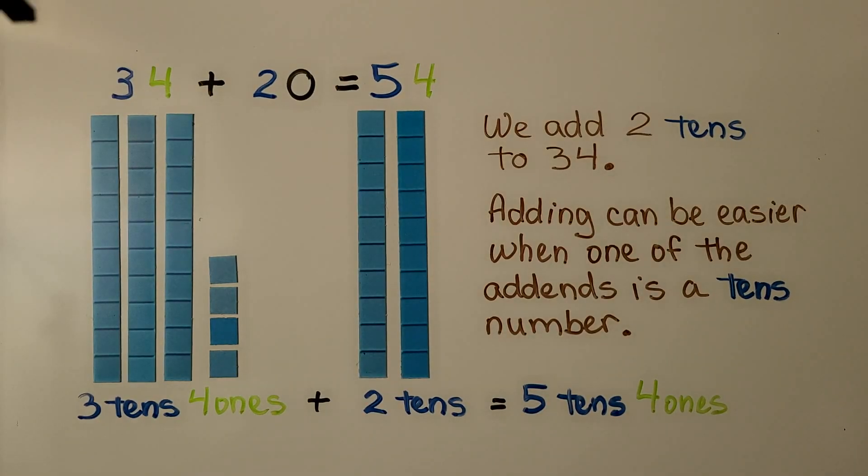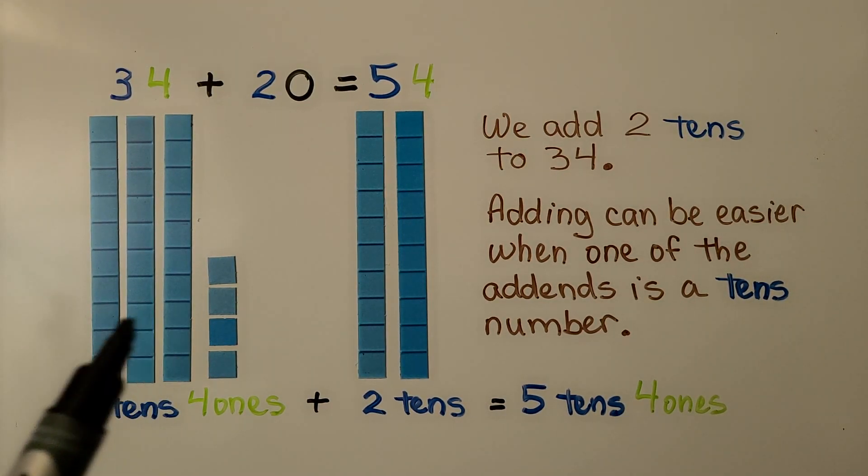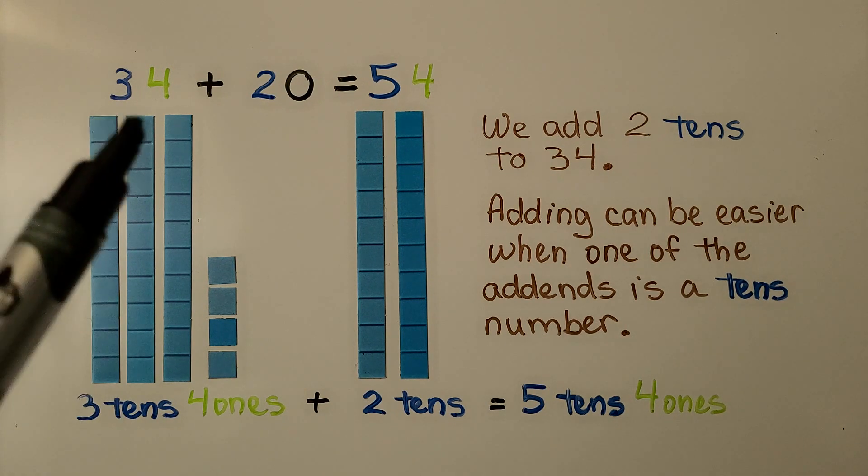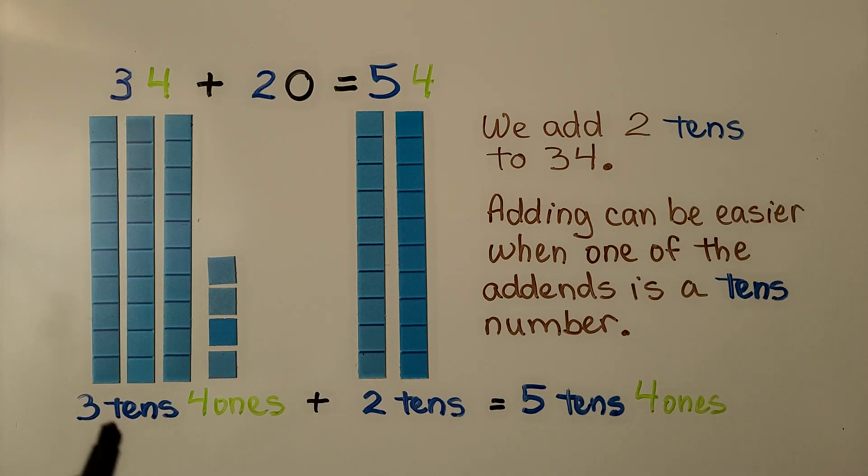Here we have 34 plus 20. That's three tens, four ones for 34, and 20 is two tens. That means we have five tens, four ones. We add two tens to the 34.